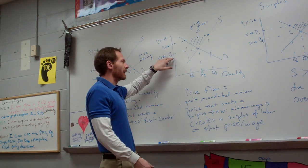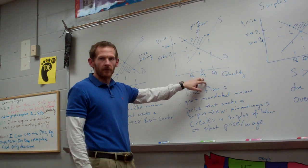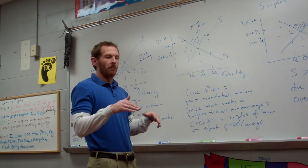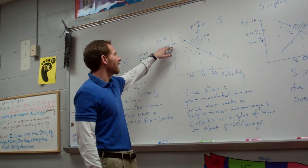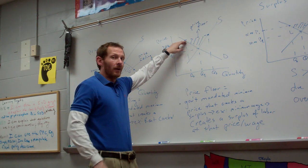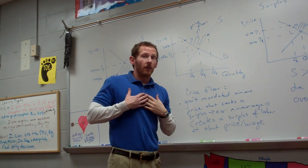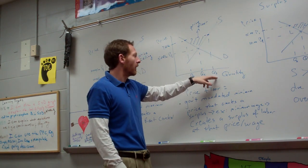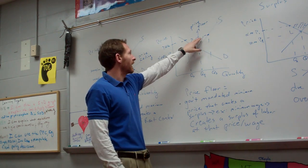Let's say the price equilibrium P sub E is $5 an hour, and at that point Q sub E people want to work for $5 an hour. But the government says the minimum wage is going to be $7.50. At $7.50, businesses will not demand as much labor — they only want to hire at Q sub D. But workers would supply more labor at that wage, so we'd have Q sub S. Supply is greater than demand, and this creates a price floor.